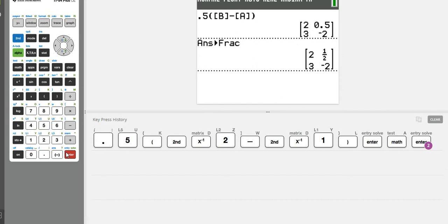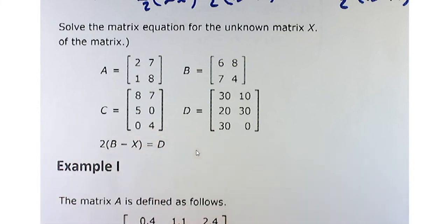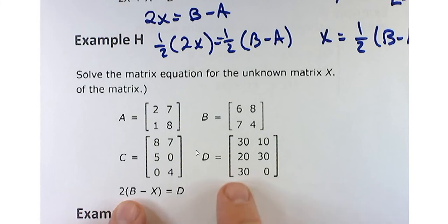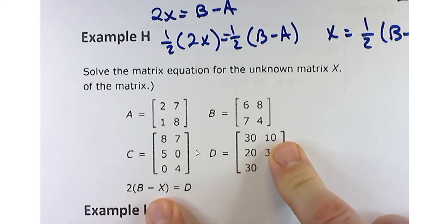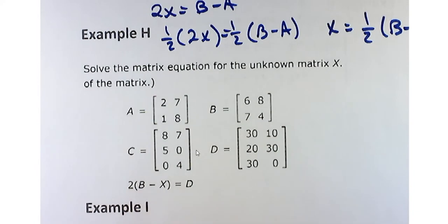Looking at the next part — we can't multiply B and D, but you can subtract them. Actually, B and D are different dimensions, so you wouldn't be able to solve for X there either. Once you tried 2 times something minus 2X, B and D are just different dimensions — so this one won't work. We can just stop right there.